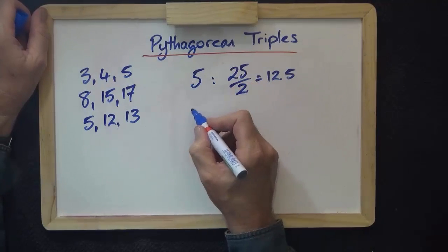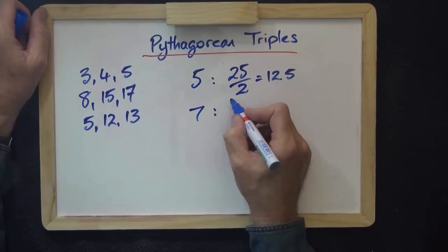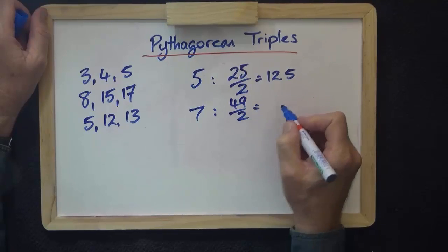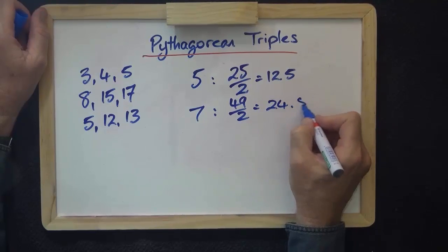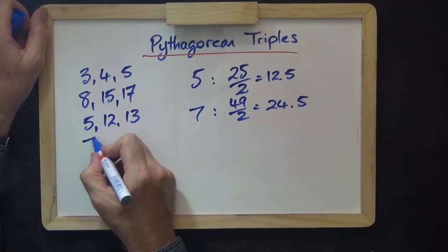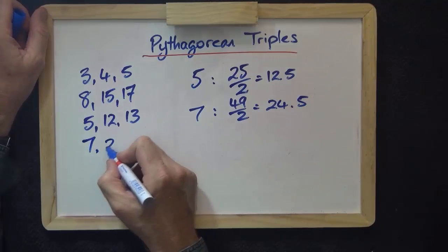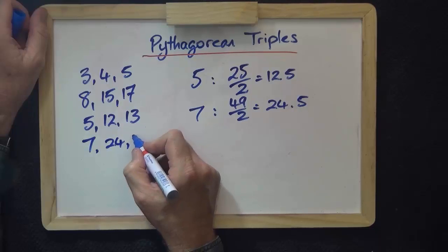I take 7. 7 squared, 49. Divide by 2 is 24.5. The Pythagorean triple is 7, 24, 25.